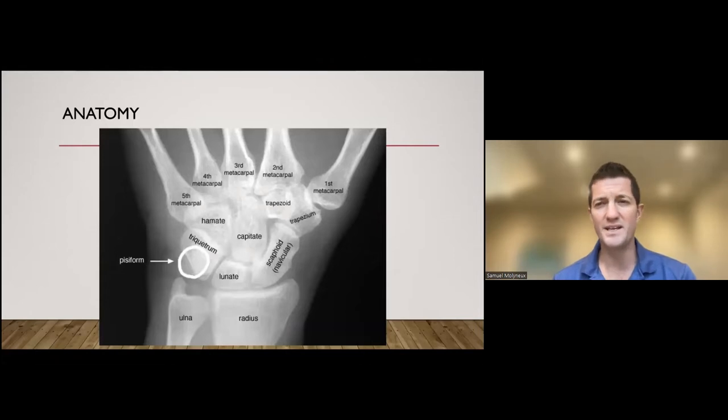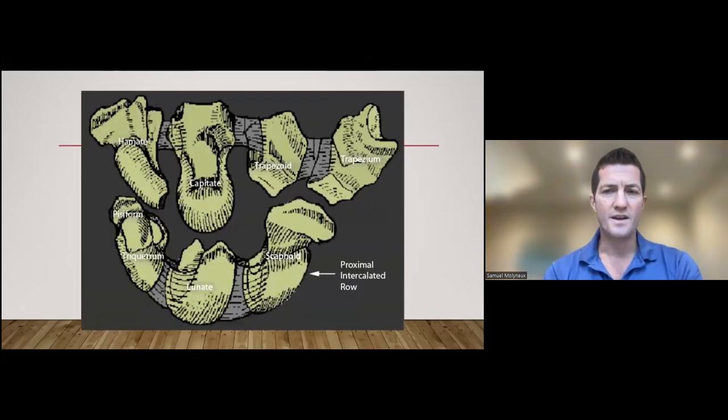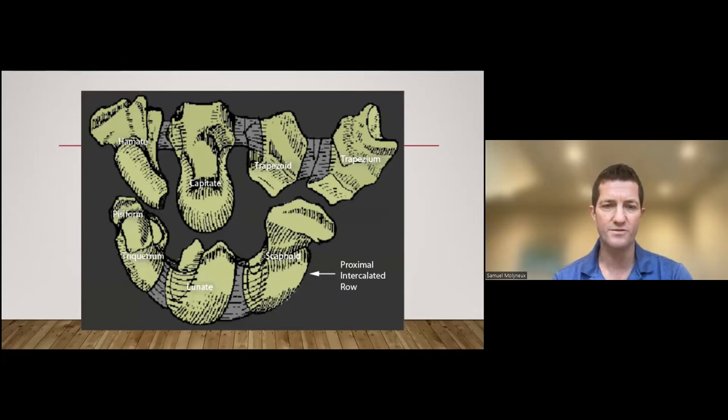So the anatomy - please just be able to name the bones in the hand. It's amazing how often you get someone into a viva and they get the triquetrum, the trapezoid and the trapezium the wrong way around. Just learn them. When you look at them, think of them as two separate rows really, a proximal row and a distal row. The distal row is made of hamate, capitate, trapezoid and trapezium with the proximal row called this intercalated row: the scaphoid, lunate and triquetrum. The reason why we think of them in two rows is that they almost act independently of each other.